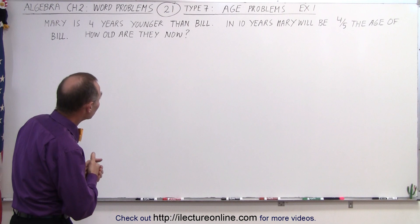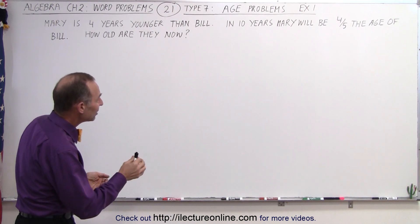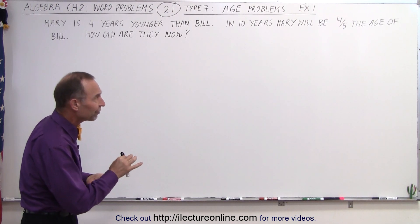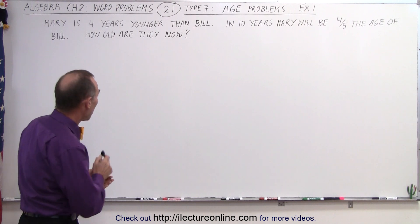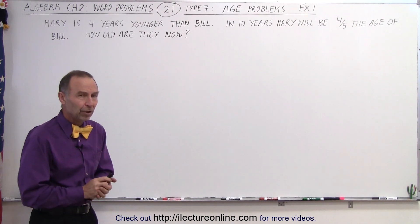Mary is four years younger than Bill. In 10 years, Mary will be four-fifths the age of Bill. How old are they now?